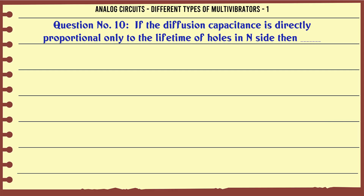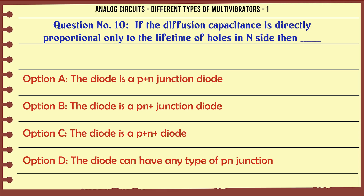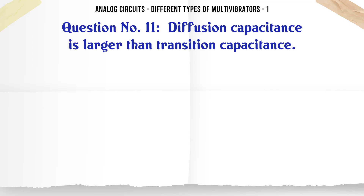If the diffusion capacitance is directly proportional only to the lifetime of holes inside, then: A: The diode is a P-injection diode. C: The diode is a P-in diode. D: The diode can have any type of P-injection. The correct answer is: the diode is a P-injection diode.